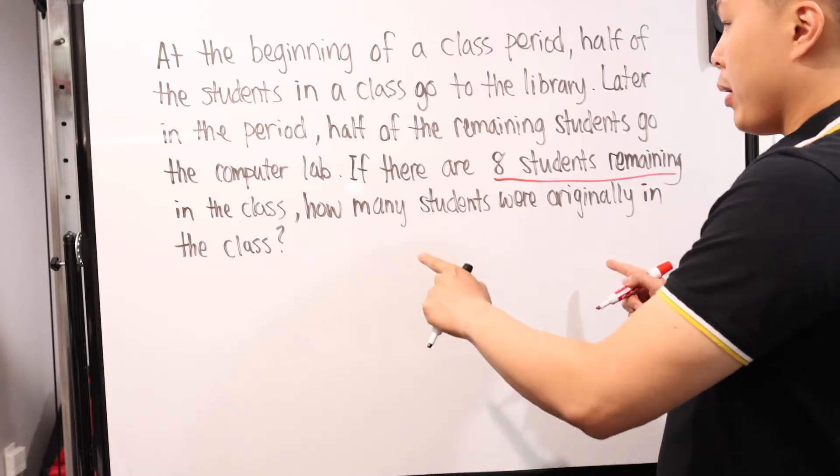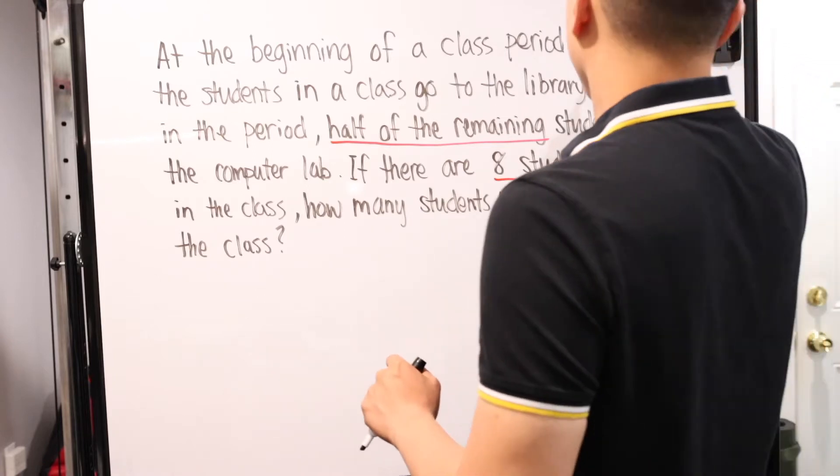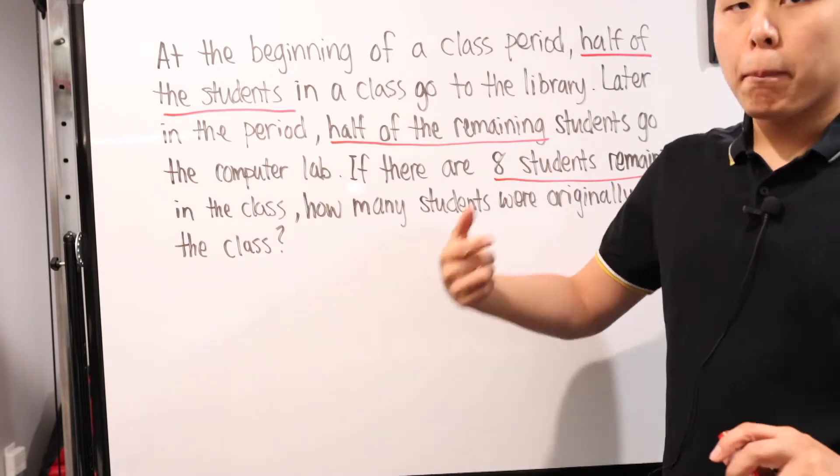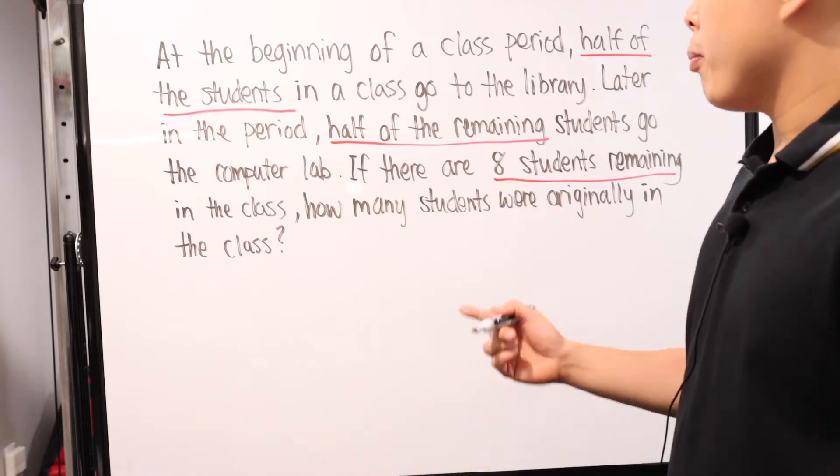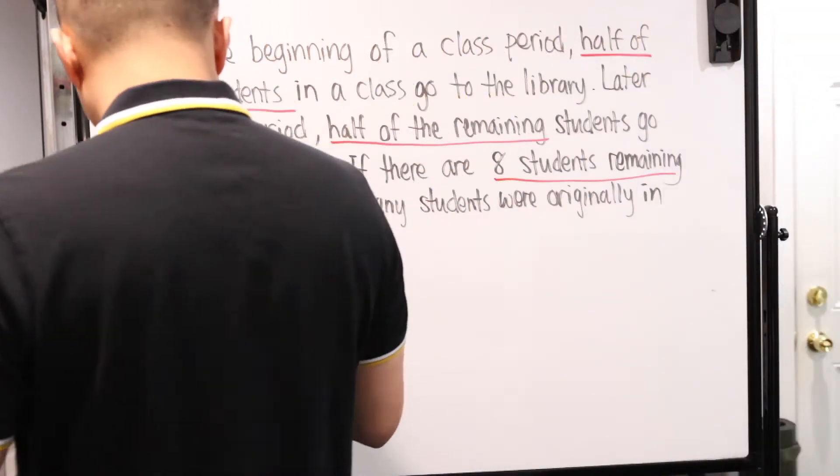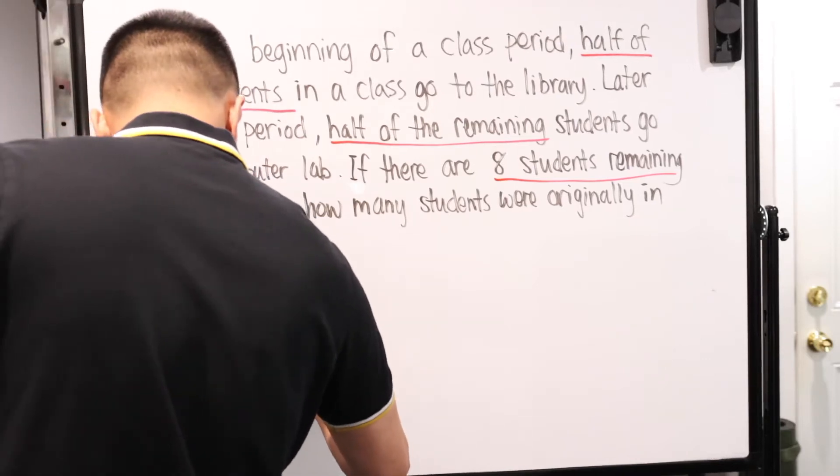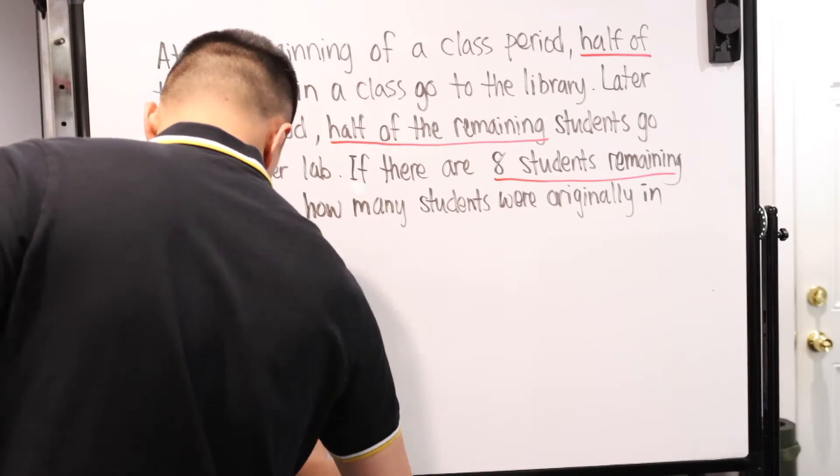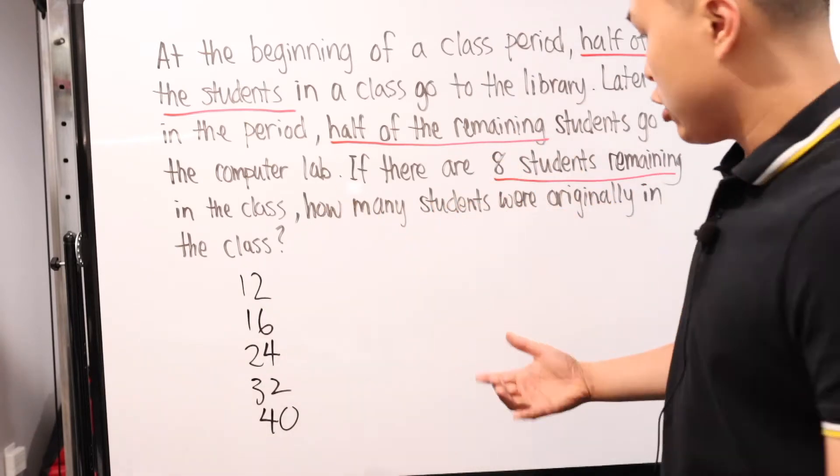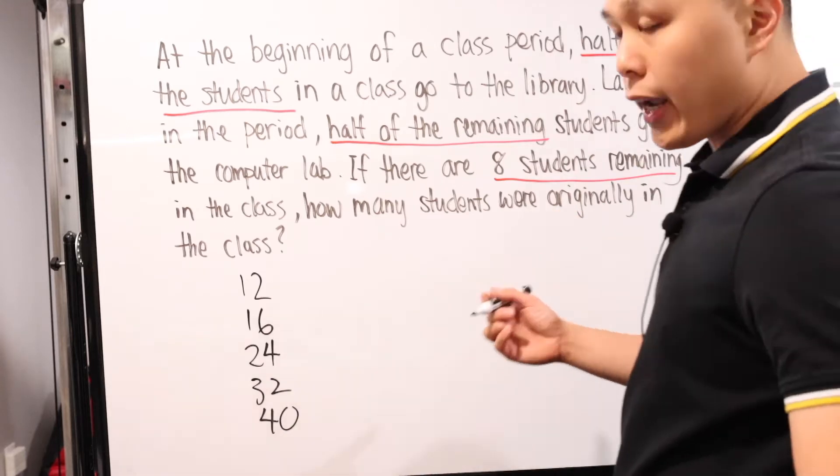You can definitely find the equation and then solve for X and figure out what it is and hopefully it equals eight. But why go through trouble when you already know the end result is that there are eight students remaining? That was half of the remaining students that went into the computer lab. And prior to that, that was half the number of students who went to the library. So from there you just go backwards and backwards again.